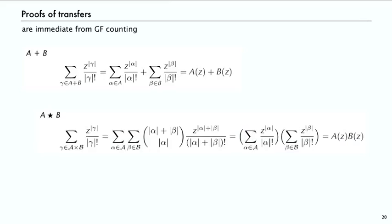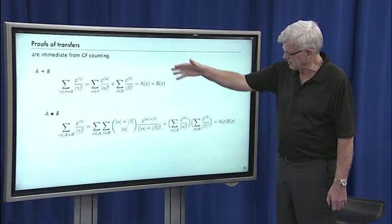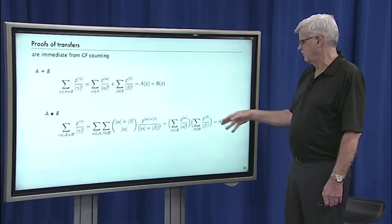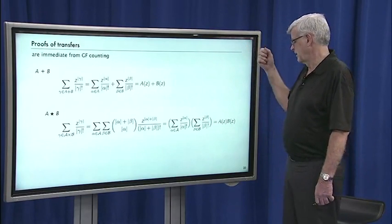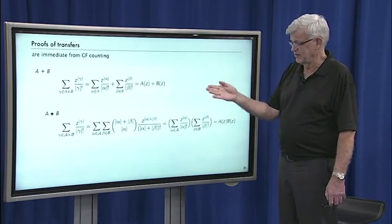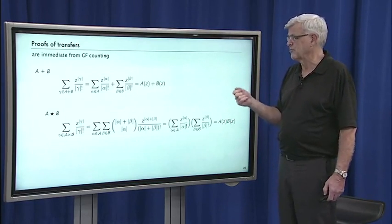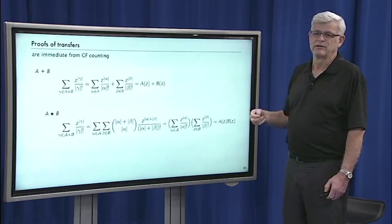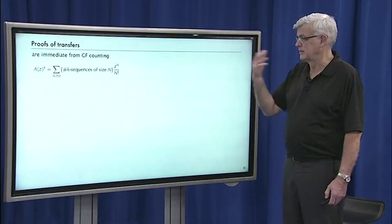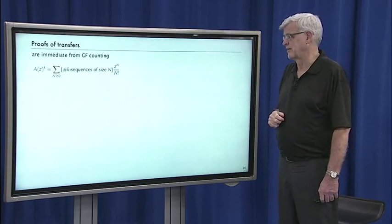For the star operation it's more complicated. As we did in the small example, we simply choose some set of labels for the object taken from A — there are (A+B choose A) possibilities for that. The terms are z to the size A+B over (A+B) factorial, and if we group the ones from A and ones from B, the (A+B) factorials cancel out so that contributions from A and B are independent, just as for unlabeled classes, which gives the product. It's extremely straightforward if we reason based on the pairs of objects.